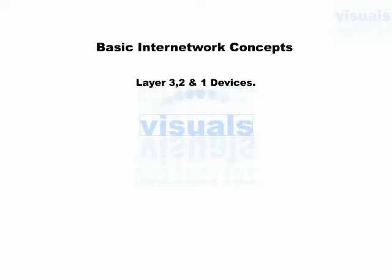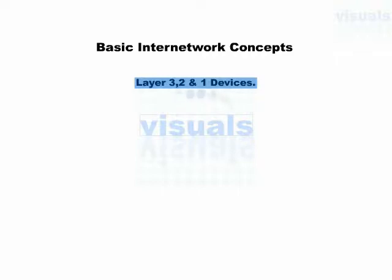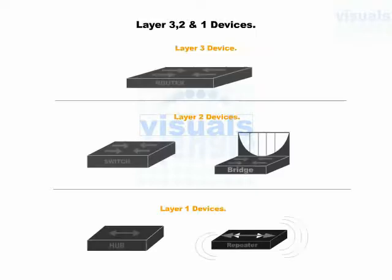We are going to discuss Layer 3, Layer 2, and Layer 1 devices. In this visual, we are going to discuss different devices which are used to build the network and internetwork. Different devices operate at different layers, as mentioned — Layer 3, Layer 2, and Layer 1 — and provide different features like broadcast domain, collision domain, etc.